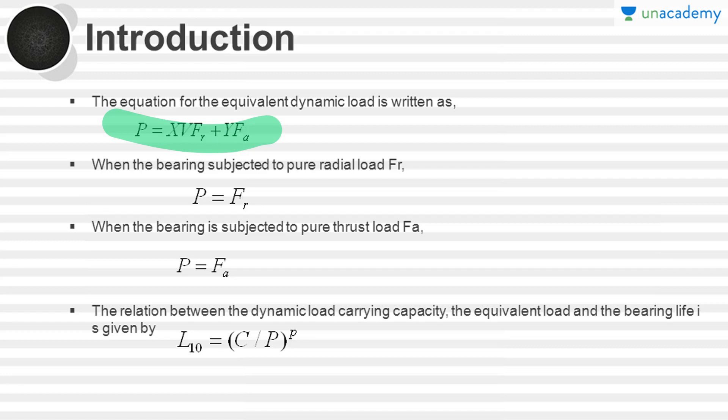The relation between the dynamic load carrying capacity, the equivalent load, and the bearing life is given by L10 equals (C/P) to the power of p, where L10 is the rating life corresponding to a reliability of 90% (0.9), C is the dynamic load carrying capacity, P is the equivalent load, and p is a constant depending on the type of bearing and the contact between the rolling elements and the races.